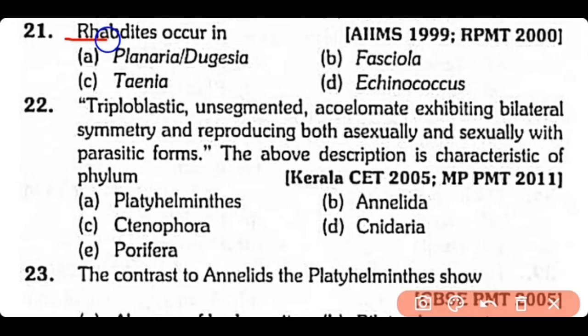Question no.21. Rhabdites occur in: Planaria dugesia, Fasciola, Taenia, or Echinococcus? The correct answer is option A. Planaria has rhabdites whose function may help in adhesion.